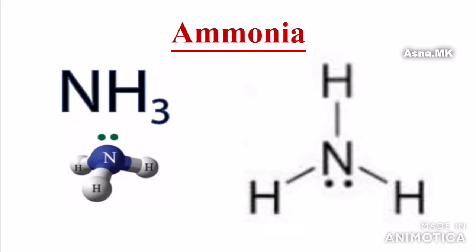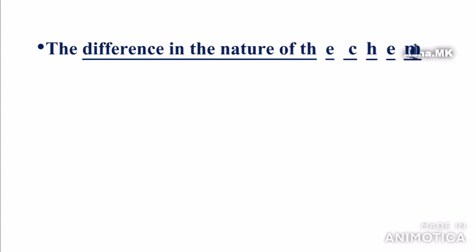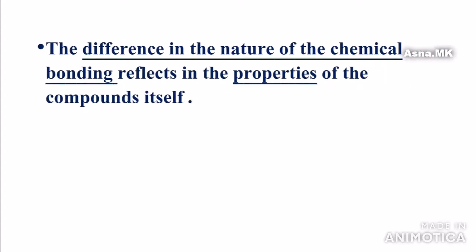Ammonia also has a bent shape and is a polar molecule — it has delta-negative and delta-positive charges, making it polar in nature.